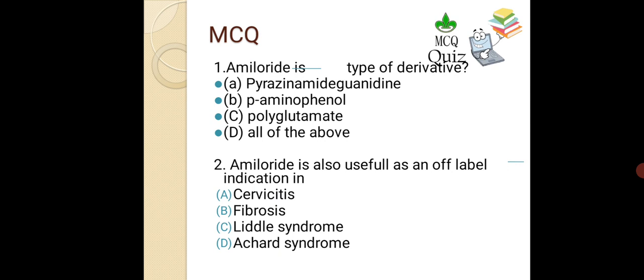MCQ 1: Amiloride is best described as a derivative of which type? Options: A. Pyrazine carboxamide guanidine, B. Para-aminophenol, C. Polyglutamide, D. All of the above. The correct answer is A — pyrazine carboxamide guanidine. MCQ 2: Amiloride is also useful as an off-label indication in cystic fibrosis, Liddle syndrome, and Achard syndrome. The correct answer is Liddle syndrome, which is an inherited form of high blood pressure that begins at an early age, in childhood or adulthood.